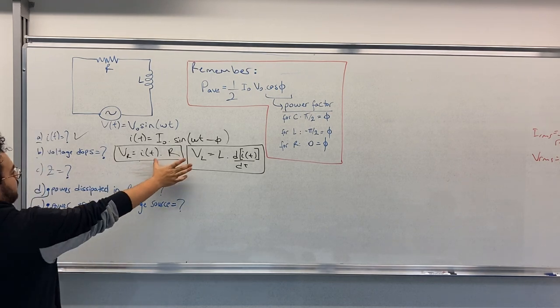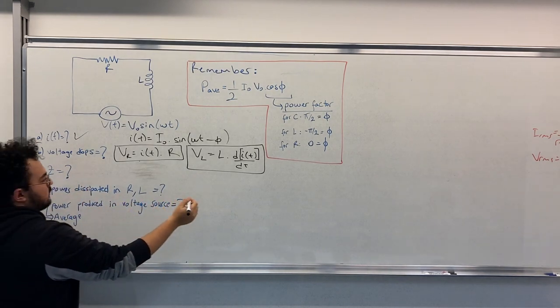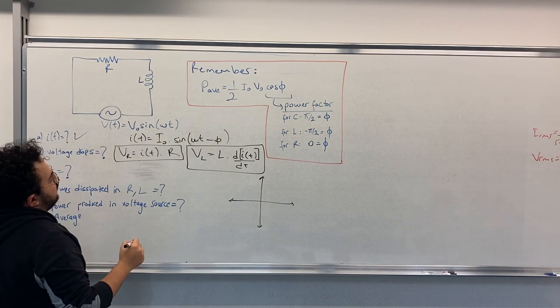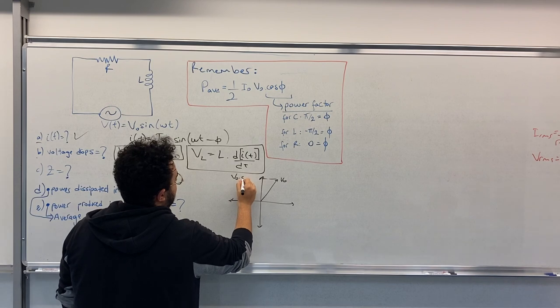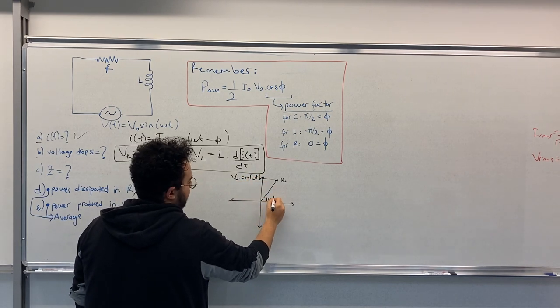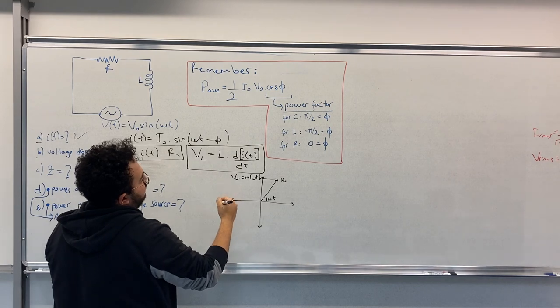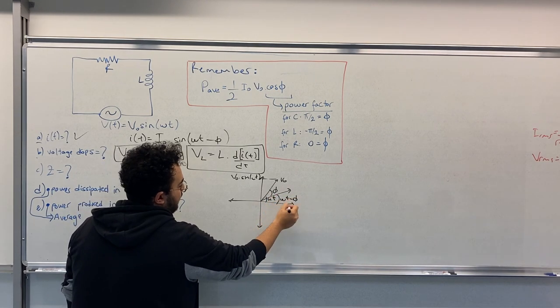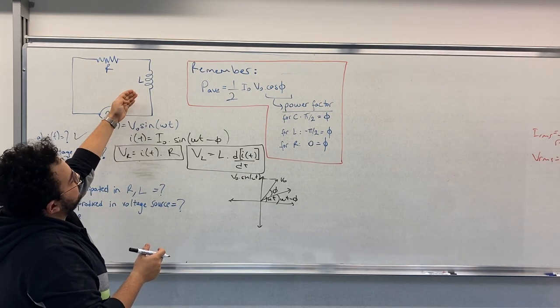What is the impedance? In order to calculate the impedance you need to solve the phasor. Now let's say this is V0, so this is V0 times sin(ωt). And we assume that I has a minus phase difference, so this is ωt minus phase. And for the inductance, the voltage leads the current, so this is VL.